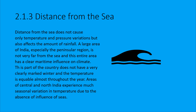Areas close to the sea have less temperature variation, less pressure variation, and moderate rainfall. The peninsular region of India is not very far from the sea, so coastal areas have sea influence on their climate. In coastal areas the temperature stays more equal throughout the year, while central and north India have strong seasonal variation.